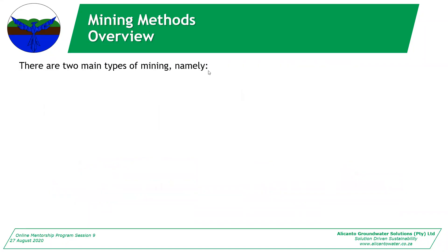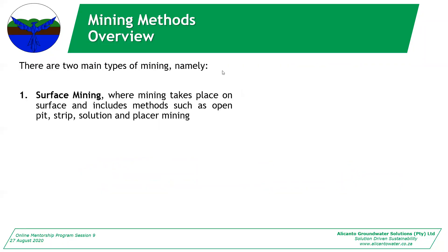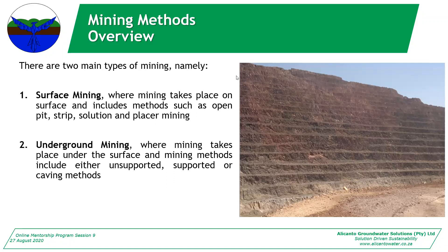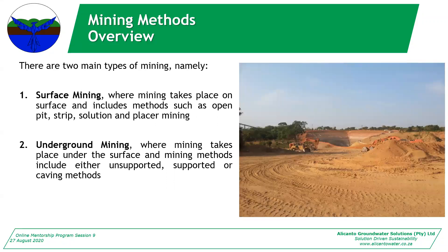There are two types of mining. Surface mining takes place on the surface and includes methods such as open pit, strip mining, solution mining, and placer mining. Underground mining takes place under the surface and includes unsupported, supported, or caving methods. This picture shows an adit going into a decline shaft, and in the background you can see the main shaft already at the mine.